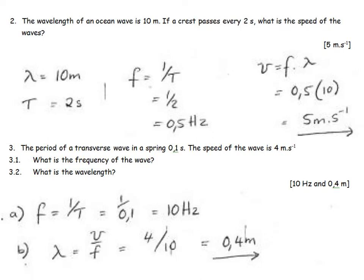The wavelength of an ocean wave is 10 meters. If the crest pass every 2 seconds, what is the speed of the wave? A crest passes every 2 seconds. How long does one wave? A crest is telling me that I am, and it's passing. So we've got a crest, and it goes past, and then the next crest comes after 2 seconds. So that's one wave is going to be 2 seconds. So that's the period of the wave. I can work out the frequency. It's 1 over the period.